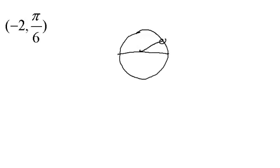This would be our solution, but because it's negative 2, we go to the opposite end of the unit circle and end up right here. So here's our solution: negative 2, pi over 6.